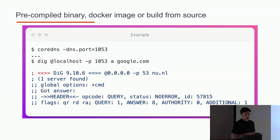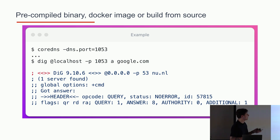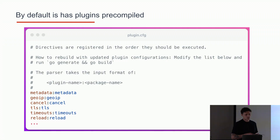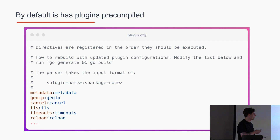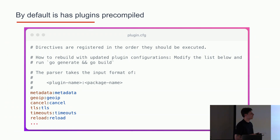If you want to use or install CoreDNS, you can have a pre-compiled binary, use a Docker image, or build it from source. In this example I have the pre-compiled binary — I specify the port it needs to run on and using a dig command I will receive the DNS response, it's really that easy. By default it also has a few plugins pre-compiled. I took this file from the CoreDNS repository — they have a whole list of all the plugins that are available, and you can add your own plugin at the bottom, clone the repository, run go generate and go build, and you have your binary with your custom plugin.